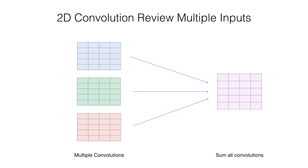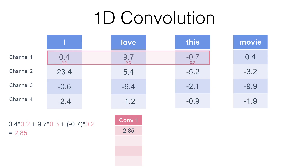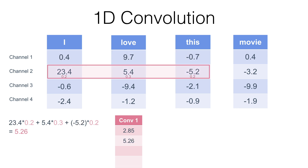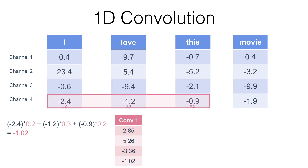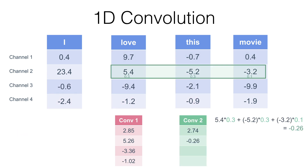You can actually take in multiple inputs too — a lot of students miss this. If we have a color image turned into three channels — red, green, blue — we can do the same thing with a convolution. We have three different blocks of weights, and we sum the result of the convolution of each block on each input channel to get a single output channel. So we can have multiple inputs and multiple outputs in this way.